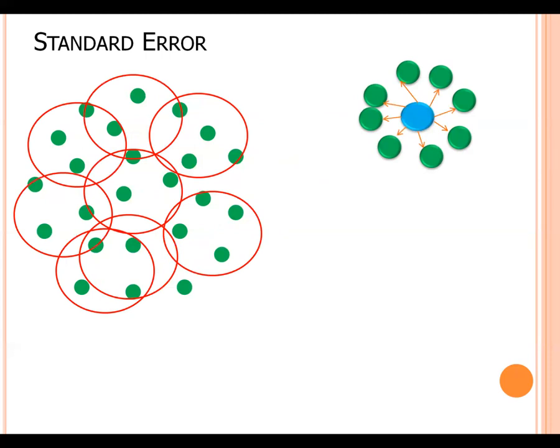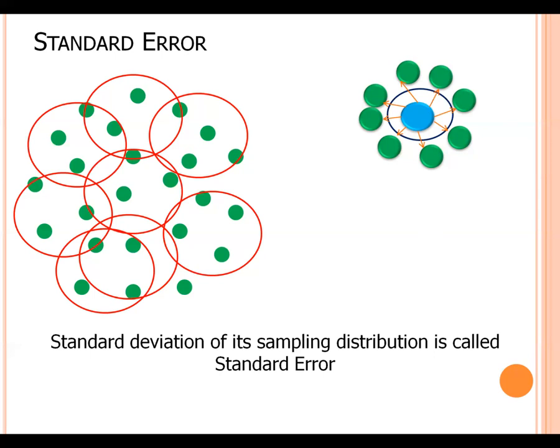This is the distance from sample mean and grand mean. This is called sampling distribution and standard deviation of its sampling distribution is called standard error.